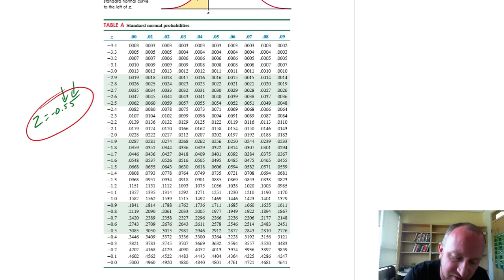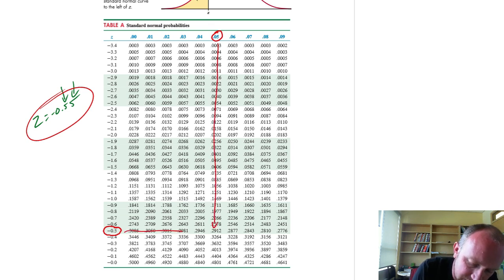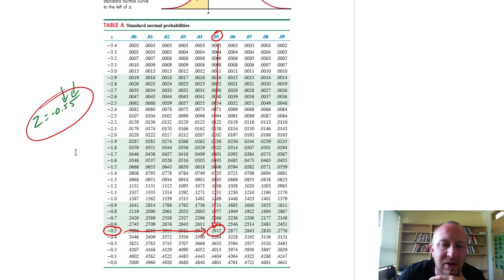So here's our value of interest, negative 55, 0.55. So here's that negative 0.5. And there's that second decimal 5, so that gives us 0.55. And if I come down here, where these two join, that gives me my value of interest there, 0.2912.